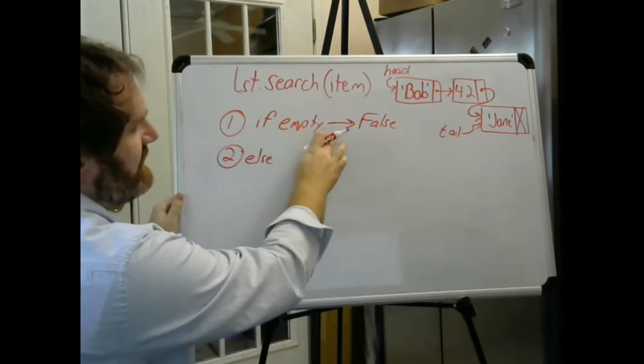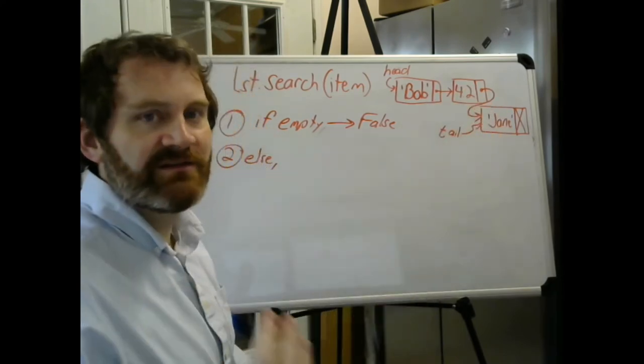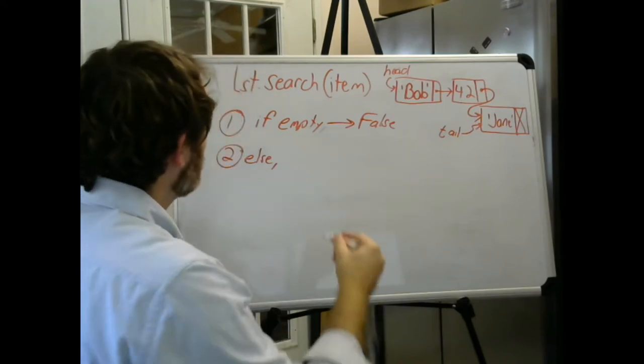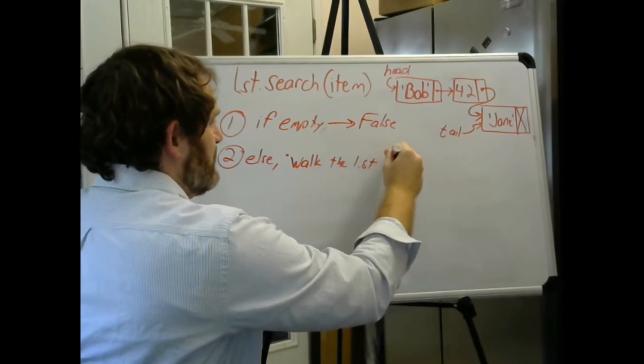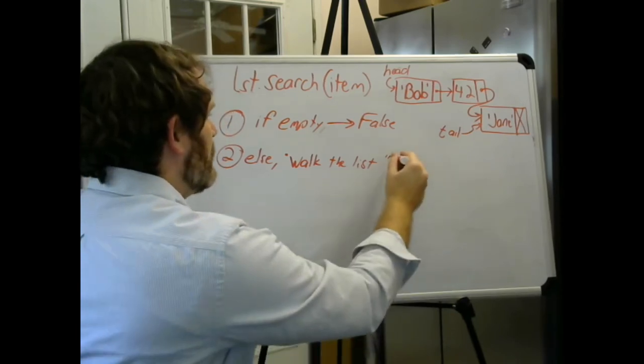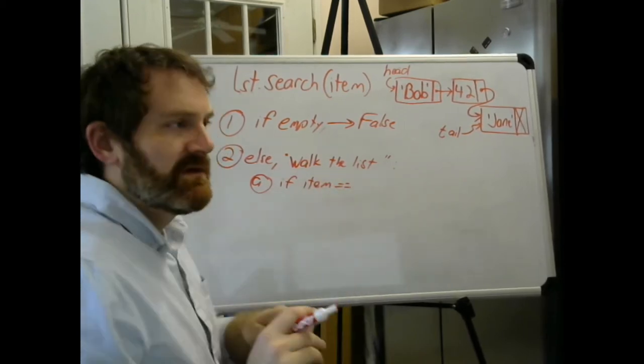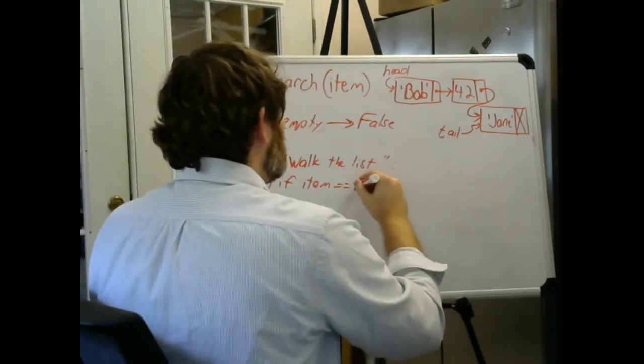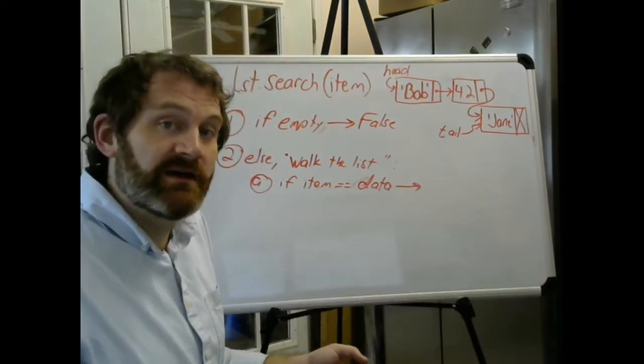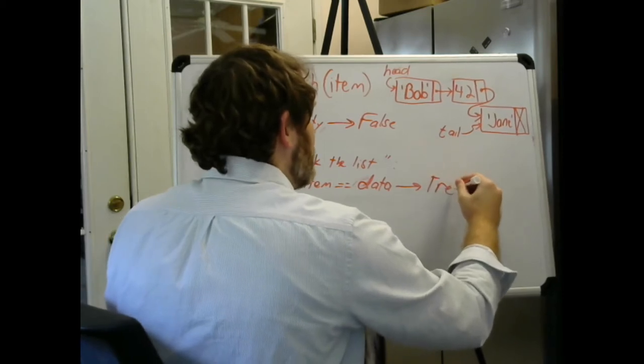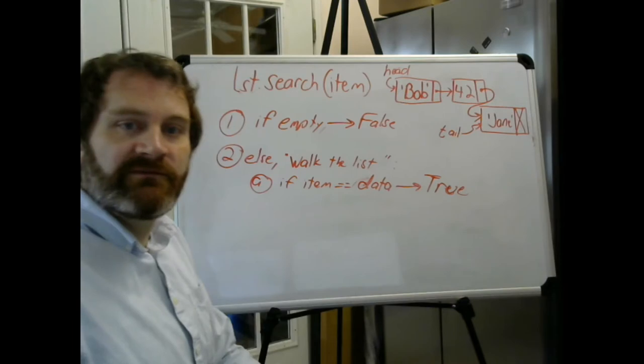But if the list isn't empty, what do we got to do? Else, our strategy is we got to go to each node and check to see if the data in the node matches what I'm looking for. I'm going to call that walk the list. We're going to step down our list, walk the list, and if the item equals the data in the node, I have found it. I can stop, return true at that point. The item is there. No need to keep looking, I'm done.